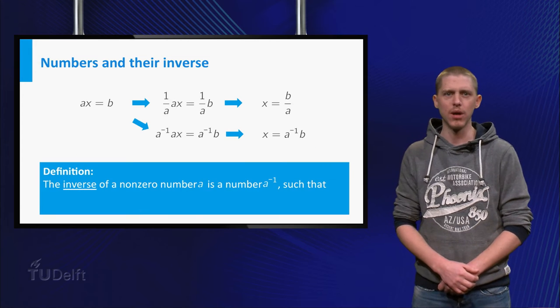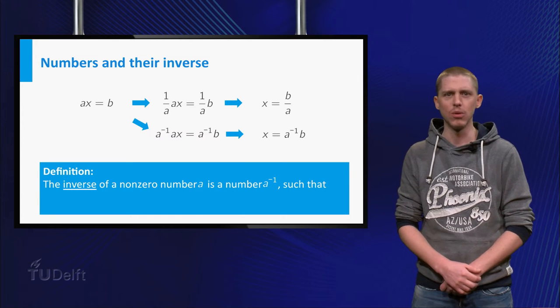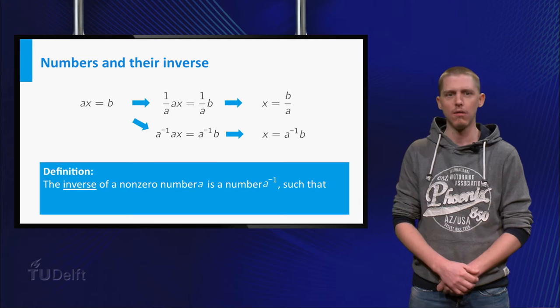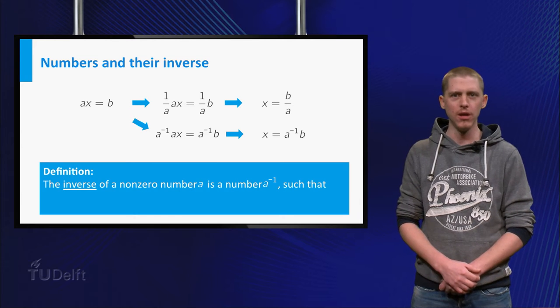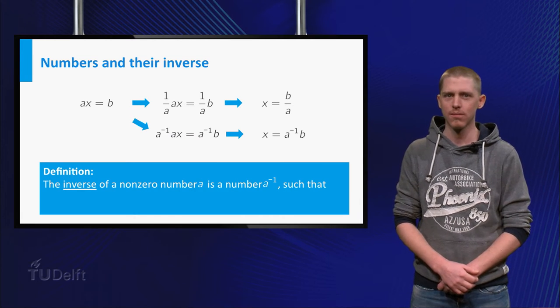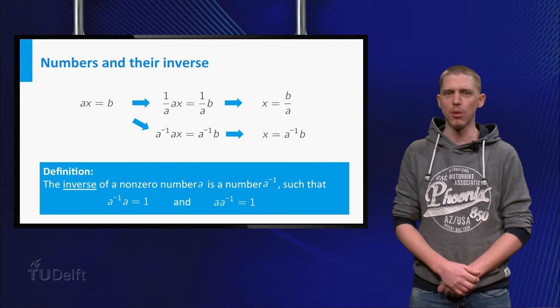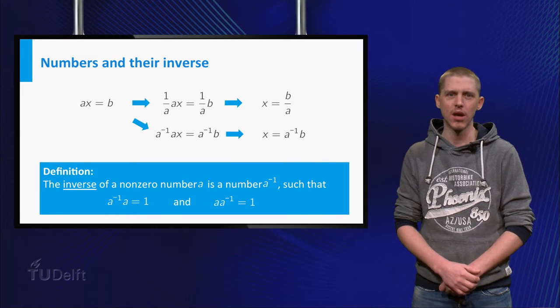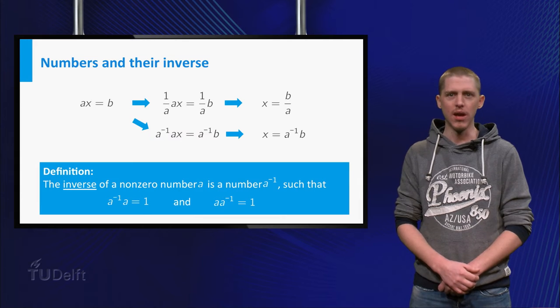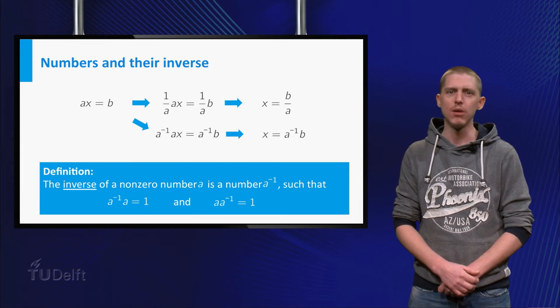You can also see division by A as multiplication with the multiplicative inverse of A, which is 1 over A or A to the power minus 1. The inverse has the properties 1 over A times A equals 1 and A times 1 over A equals 1.